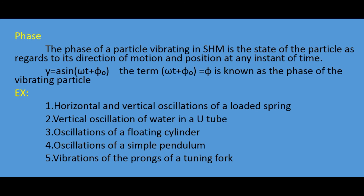The phase of a particle vibrating in Simple Harmonic Motion is the state of the particle as regards its direction of motion and position at any instant of time. We write displacement y equals a sin(omega t plus phi naught), where omega t plus phi naught is known as the phase of the vibrating particle.